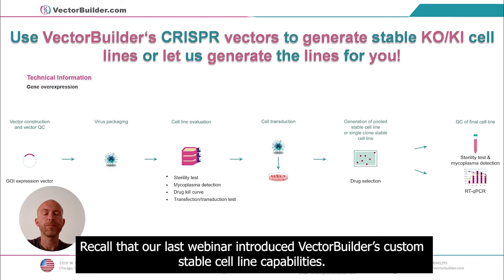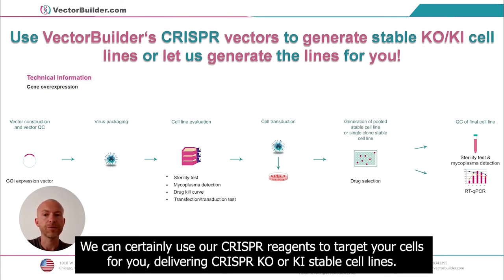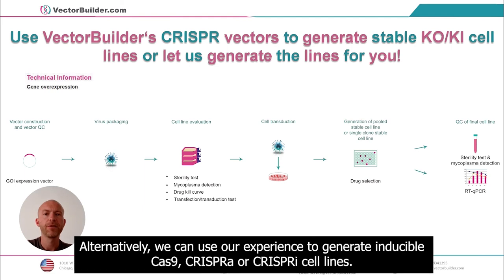Recall that our last webinar introduced VectorBuilder's custom stable cell line capabilities. We can certainly use our CRISPR reagents to target your cells for you, delivering CRISPR knockout or knock-in stable cell lines. Alternatively, we can use our experience to generate inducible Cas9, CRISPR-A, or CRISPR-I cell lines.